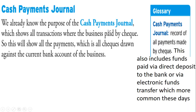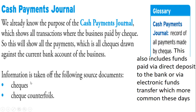The cash payments journal records all the payment transactions which the business has made — to buy goods, pay wages, or any other form of transaction where money is paid out by the business. Information is usually taken from source documents such as checks, check counterfoils, and bank statements — especially bank statements.